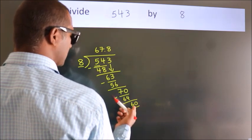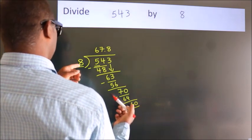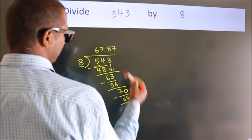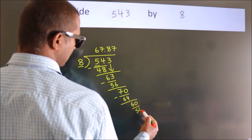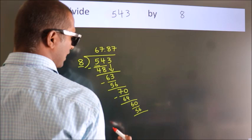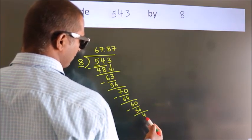A number close to 60 in the 8 table is 8 times 7 equals 56. Now we subtract. We get 4.